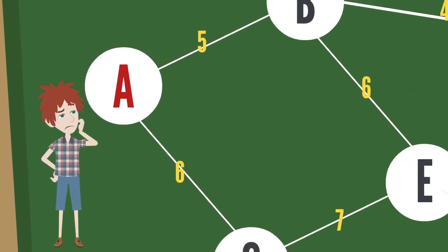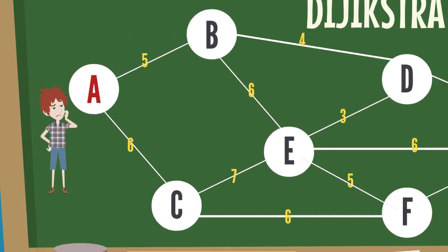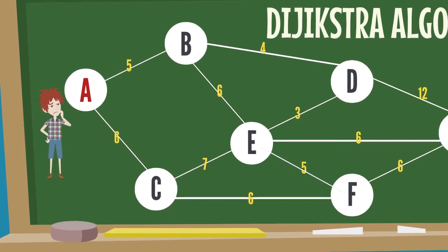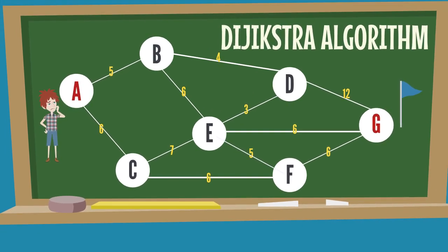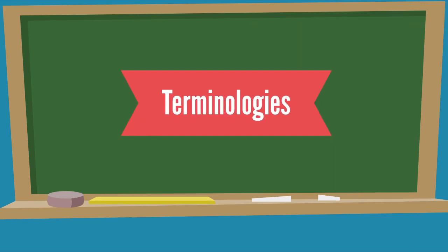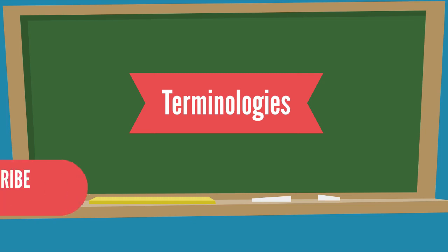Suppose we have a graph, or outmap, with seven vertices labeled A to G, as shown on the board. We want to find the shortest path between A and G. The numbers show the distance between two vertices or nodes. Before understanding Dijkstra's algorithm, we need to understand some terminologies.